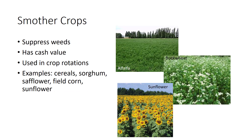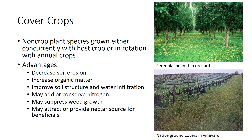Smother crops are grown for their ability to suppress weeds and for their cash value. They are effectively employed in crop rotations following the main crop and are planted at high densities to rapidly occupy a site. Cereals, sorghum, safflower, field corn, and domestic sunflowers have been effectively used as smother crops. Cover crops are non-crop plant species grown either concurrently with the host crop, usually perennial plants, or in rotation with annual crops. They are generally not harvested. Cover crops can suppress weeds, provide nutrients to the soil, and provide food and shelter to beneficial insects, mites, and spiders. They are also valued for their ability to improve soil texture, increase organic matter, increase water infiltration rates, reduce pesticide runoff and surface water, and reduce soil erosion. In Florida, bahiagrass and perennial peanut are commonly used for perennial crops. In some cases, cover crops may compete with crops or become weeds if not properly managed. When using cover crops, it is important to select a species or mix of species that provides the specific benefits desired.